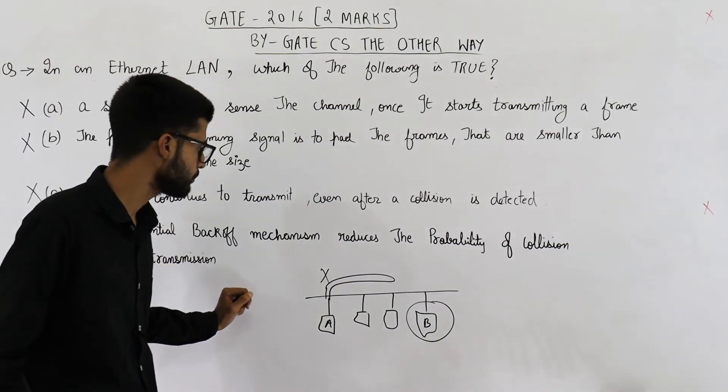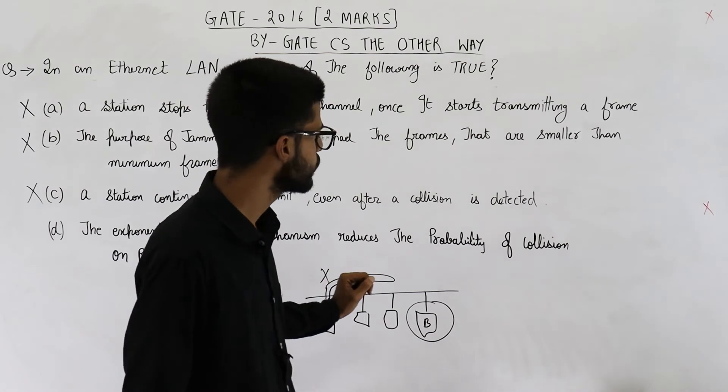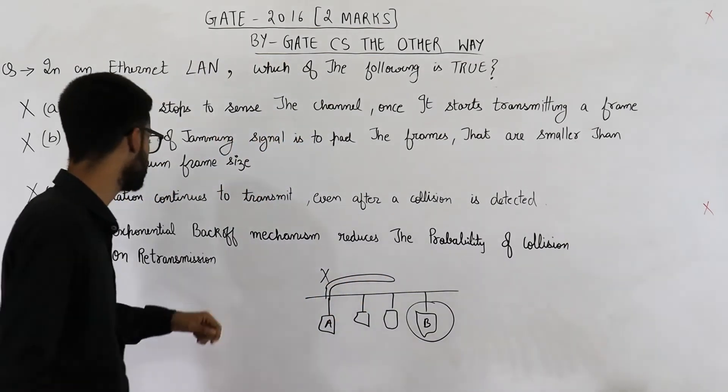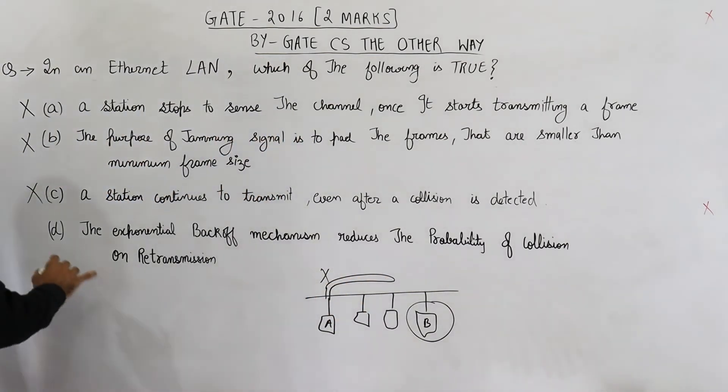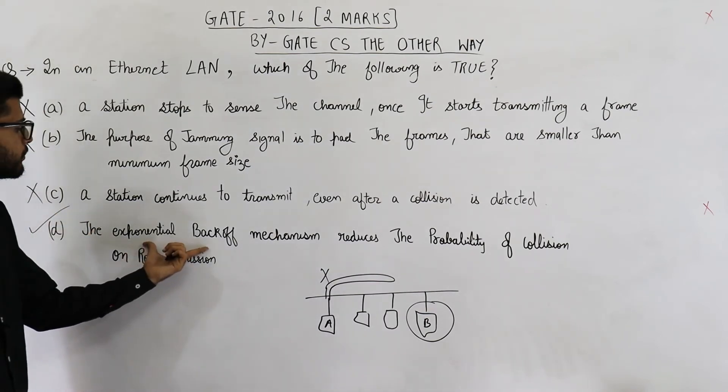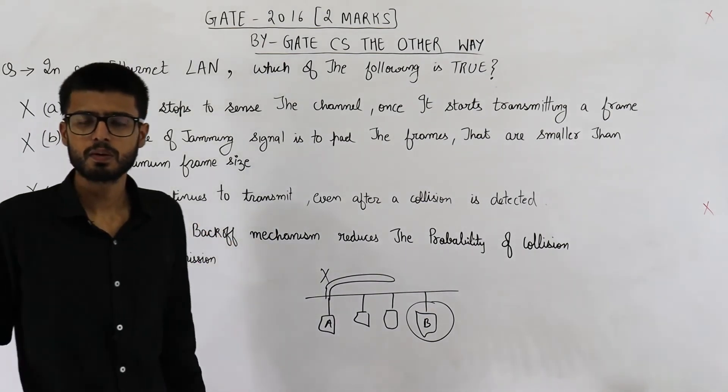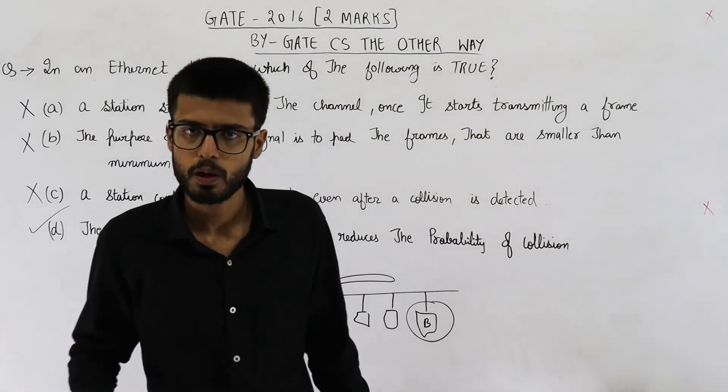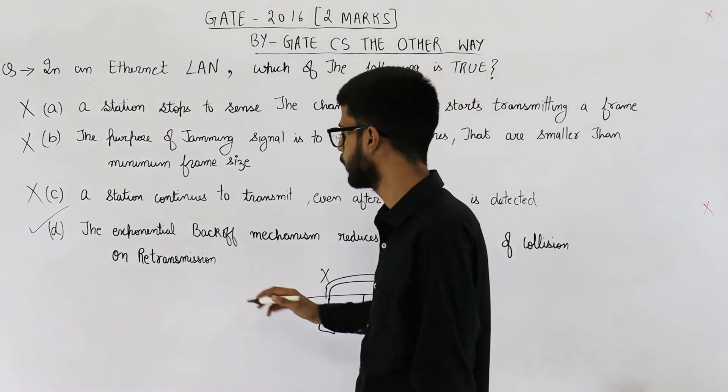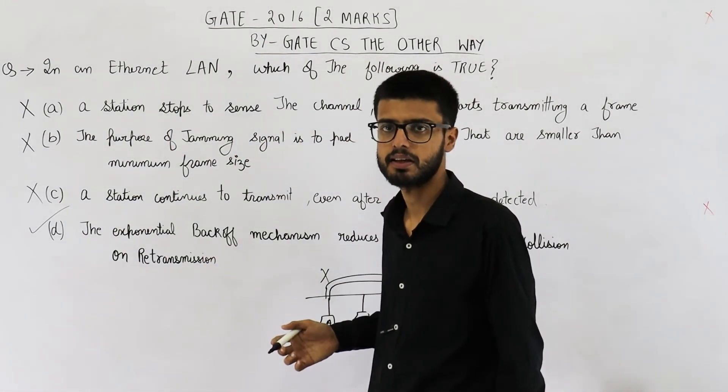Option D says exponential backoff mechanism reduces the probability of collision on retransmission. Yeah, this is true. We have already seen in theory lectures that this algorithm, exponential backoff algorithm will reduce the probability of collisions whenever we retransmit the data.